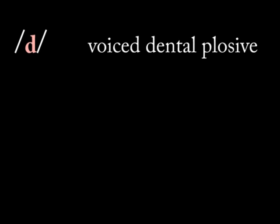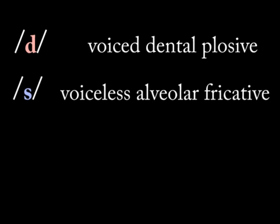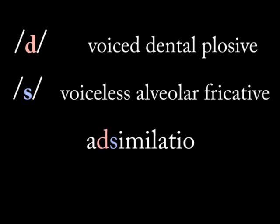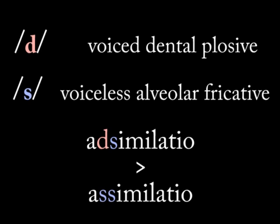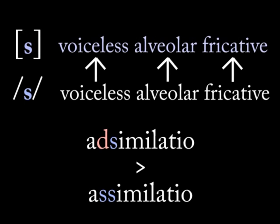Let's take an example. The Latin phoneme D has the features dental, plosive, and voiced. The phoneme S has the features alveolar and fricative. The Latin word 'ad,' prefixed to the word 'similatio,' results in the pronunciation 'assimilatio.' In other words, D comes to share all the features of the nearby S and is completely assimilated to S.